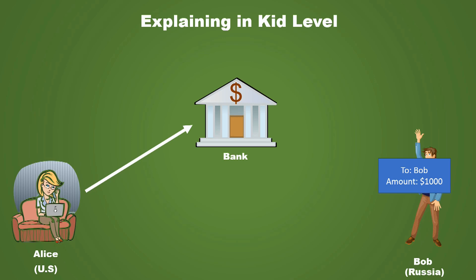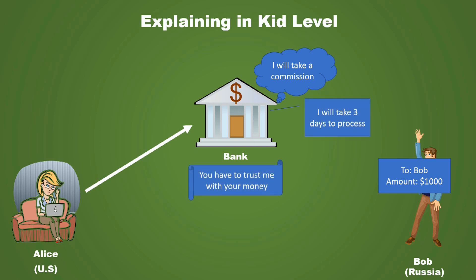So there are three problems we can see here. The bank may take a commission for doing this transaction. There is a delay of three days. And we have to trust the bank organization with our money. Blockchain is the technology in which we remove this third party — that is, the bank.